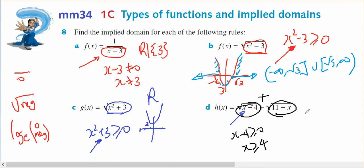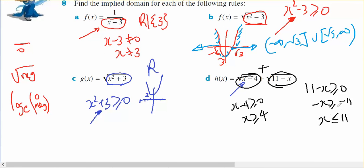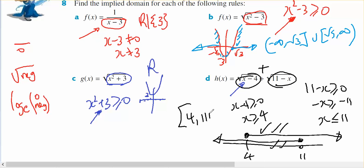And 11 minus x has to be bigger than or equal to zero, which means minus x is bigger than or equal to minus 11, where x is less than or equal to positive 11. Notice I'm turning the inequality sign around when I divide by negative 1. So from 4 up, 11 down, the overlap is between 4 and 11. So my domain is 4 through to 11.